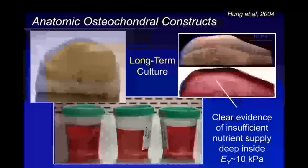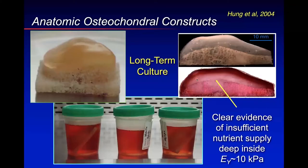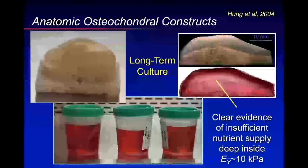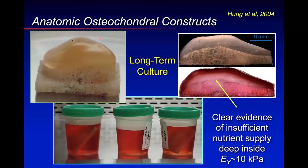Four years later, we got ambitious. Making small constructs with a diameter of about six millimeters wasn't going to be useful for clinicians — we should look to replace the entire articular surface. Using computer-aided design, we took MRI and created molds to cast a patella-shaped articular layer on a CNC machine trabecular bone substrate. We poured the agarose and grew this in urine sample cups using the same culture conditions as our small six millimeter diameter constructs.